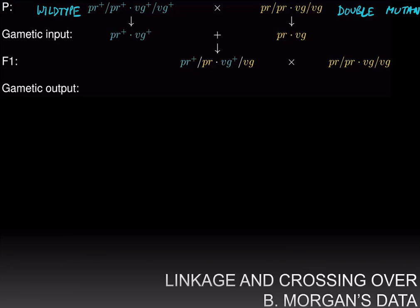The wild type individual will produce only one type of gamete: PR+ VG+. Since the double mutant is homozygous for the mutant alleles of both purple and vestigial, it will also produce only one type of gamete: PR VG. Fertilizing these two gametes gives us a dihybrid individual who is heterozygous for both purple and vestigial.